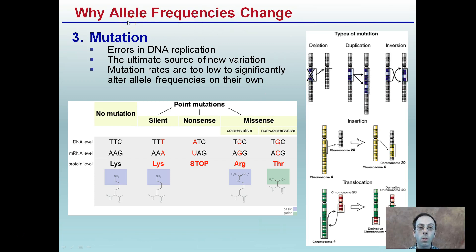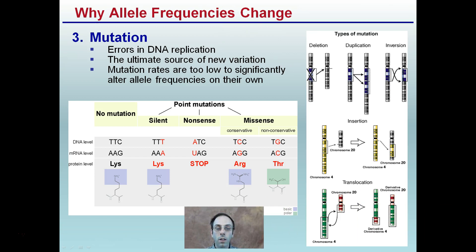Mutations are another reason why allele frequencies change. They are errors in DNA replication and represent the ultimate source of new variation. However, mutation rates are too low to significantly alter allele frequencies on their own — there also need to be selection forces present. Types of mutations include silent mutations, nonsense and missense mutations, and more drastic chromosomal mutations such as duplication, inversion, insertion, and translocation. All of these are errors in DNA.